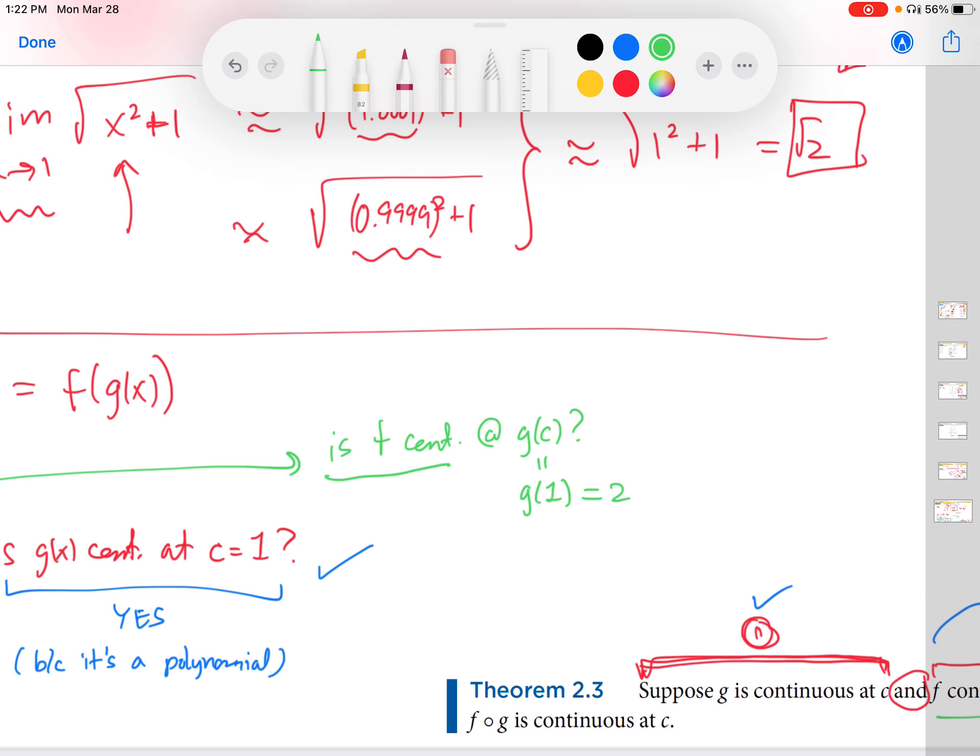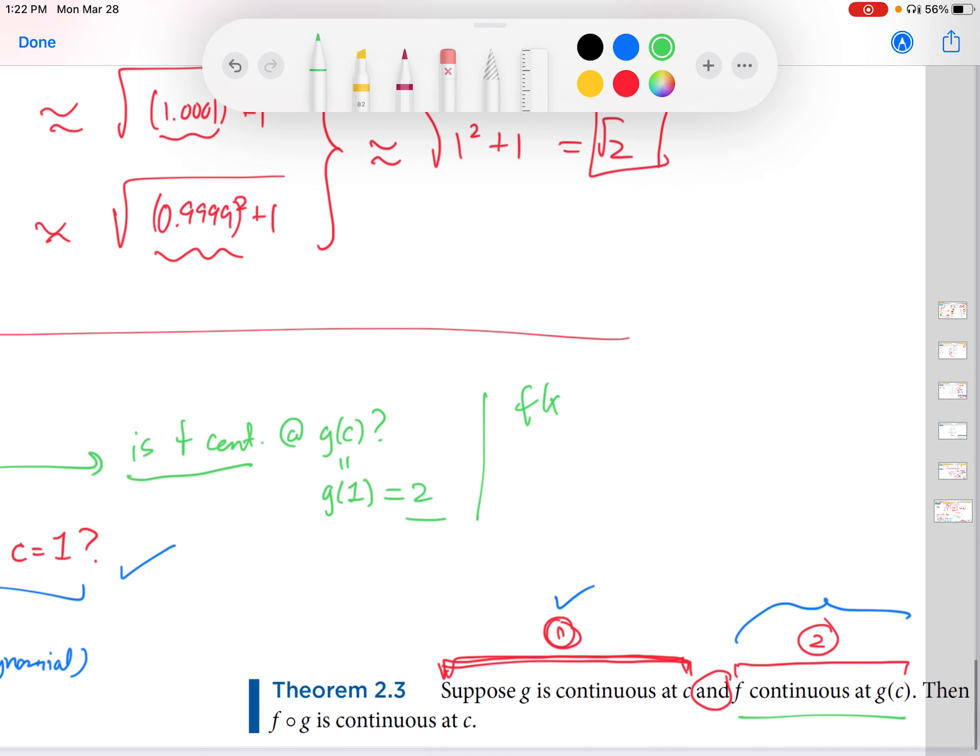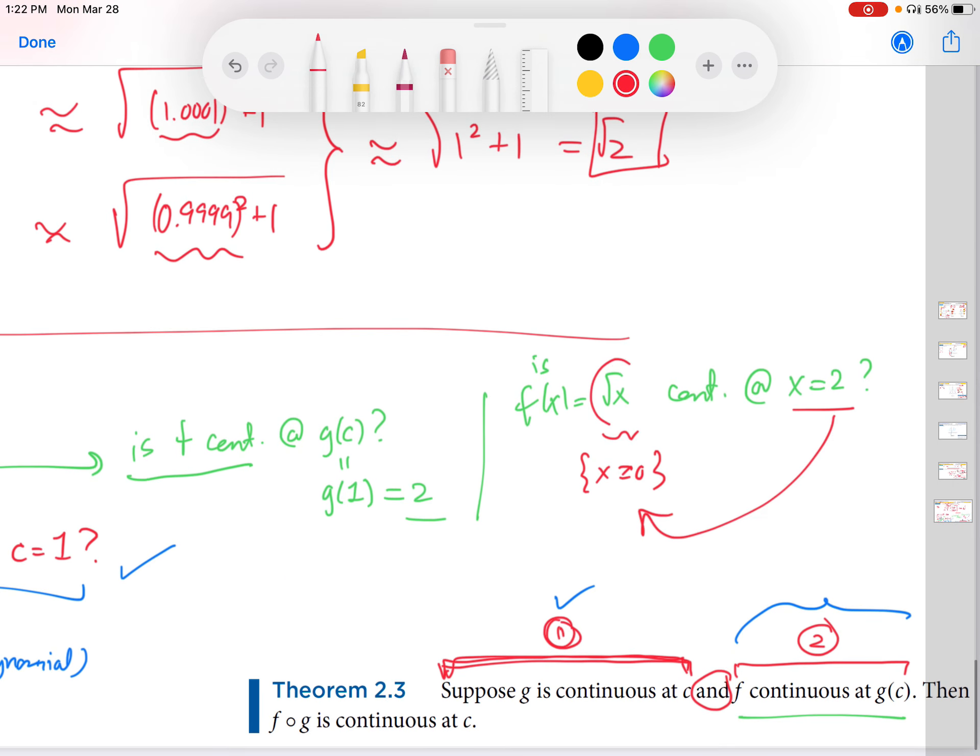So let's go to our f function. f of x here was square root of x. So is square root of x continuous at x equals 2? And the answer again is yes. Why? Because of the same theorem that I talked about a minute ago. Square root of x is a power function. Its domain is non-negative real numbers. And x equals 2 is in that domain. So by that theorem, this is theorem 2.1 here in the book. By that theorem, the power functions are continuous at all points in their domain. 2 is in the domain of the function. The power function is square root of x. So it is continuous at x equals 2. So that is another check. So we have satisfied this other check.